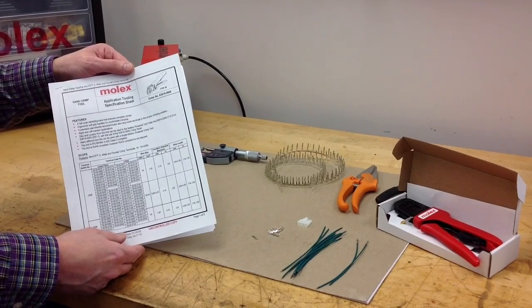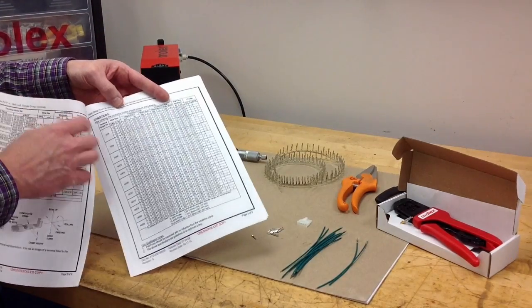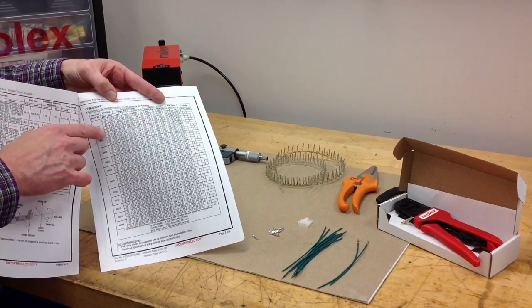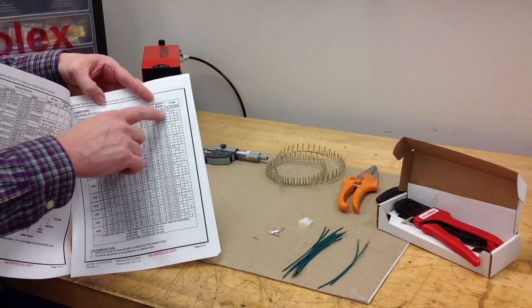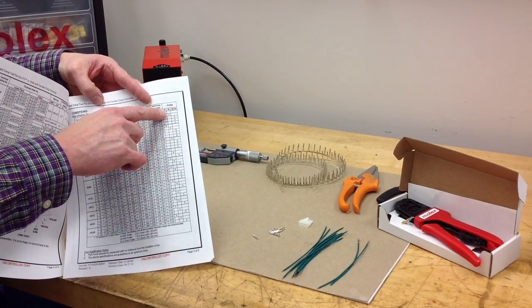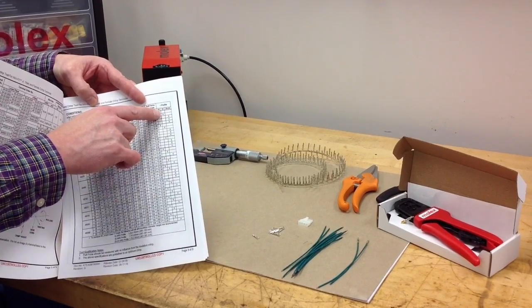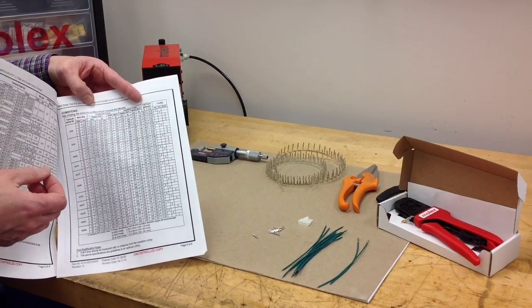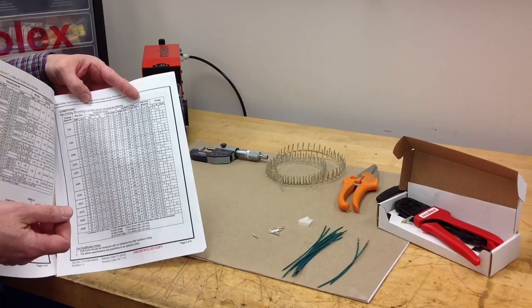An important factor to remember is that each terminal has a specific wire gauge range here that it can crimp. In this particular example, we have three crimp profiles in our hand tool. Make sure you're using the proper crimp profile with the wire gauge that you've selected.